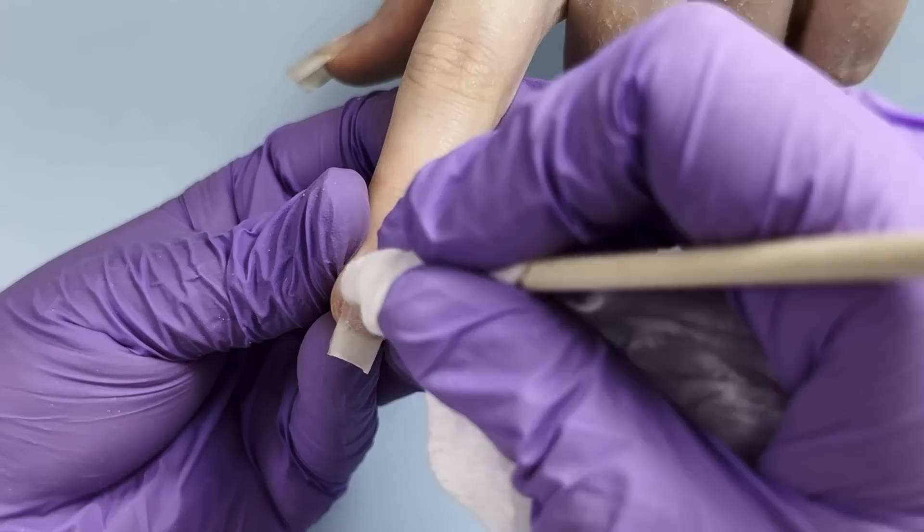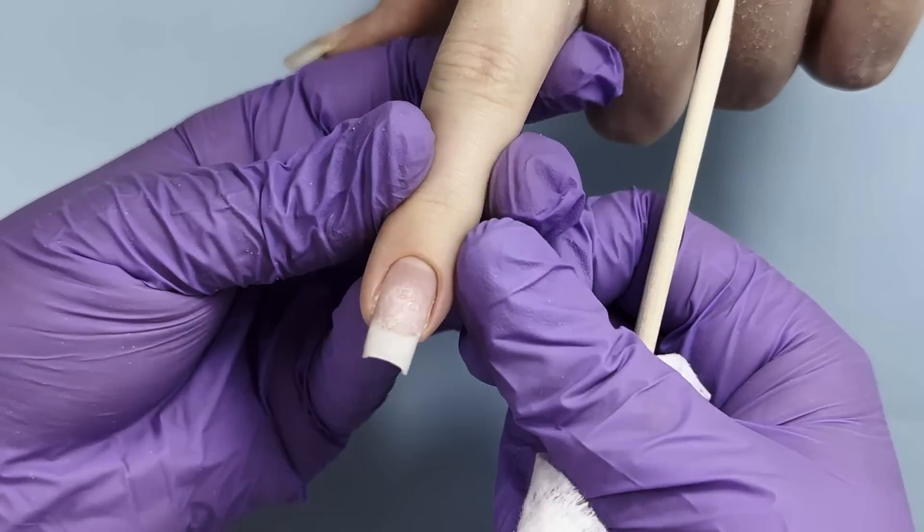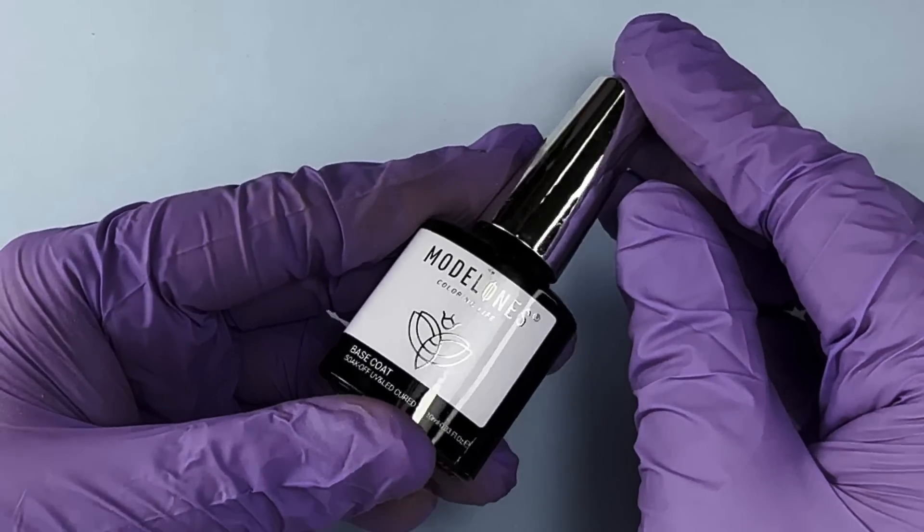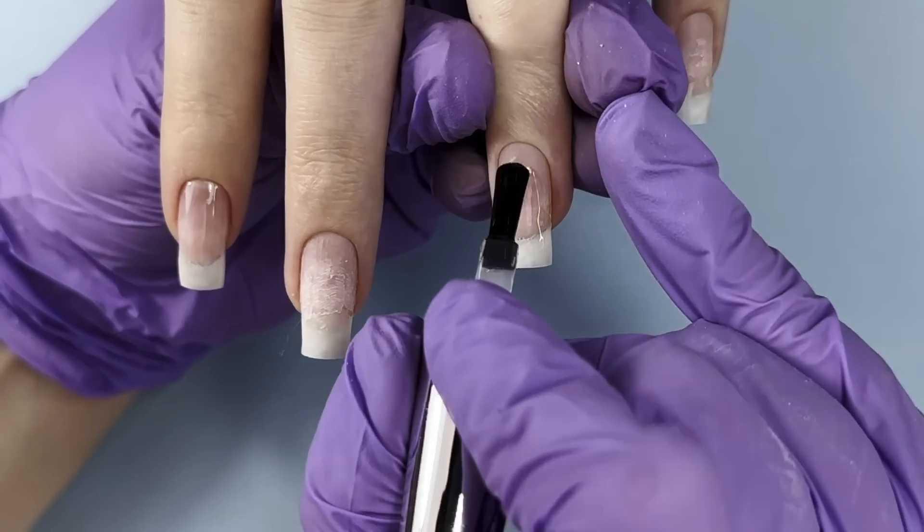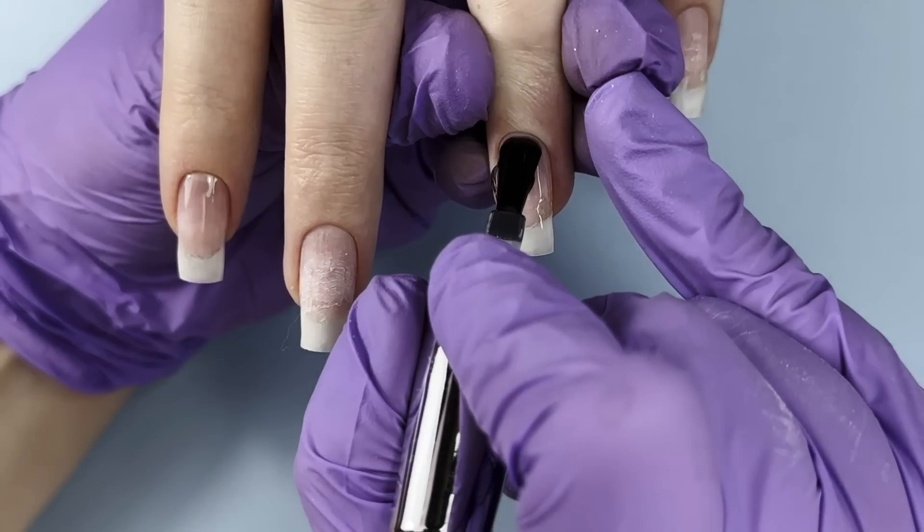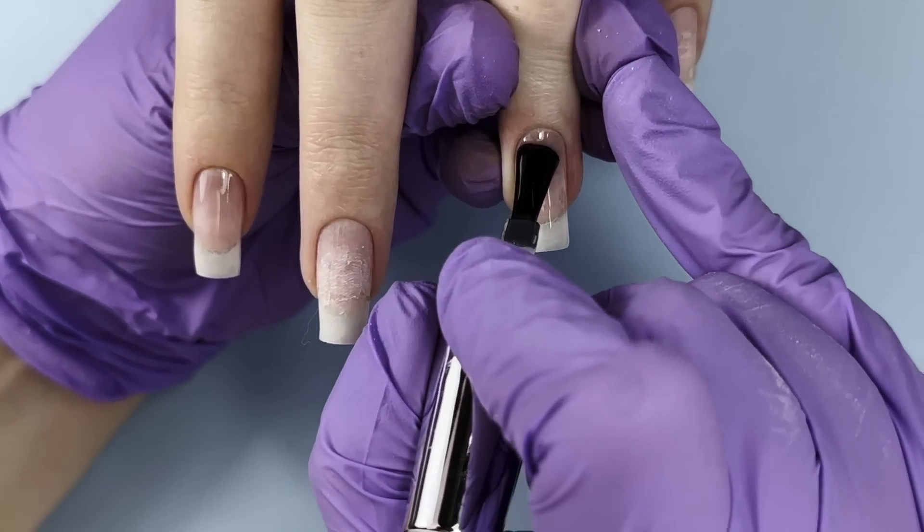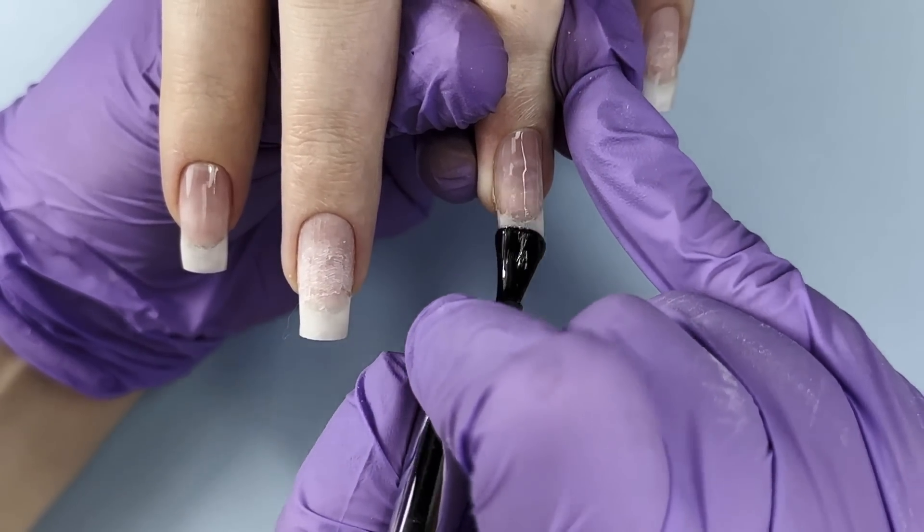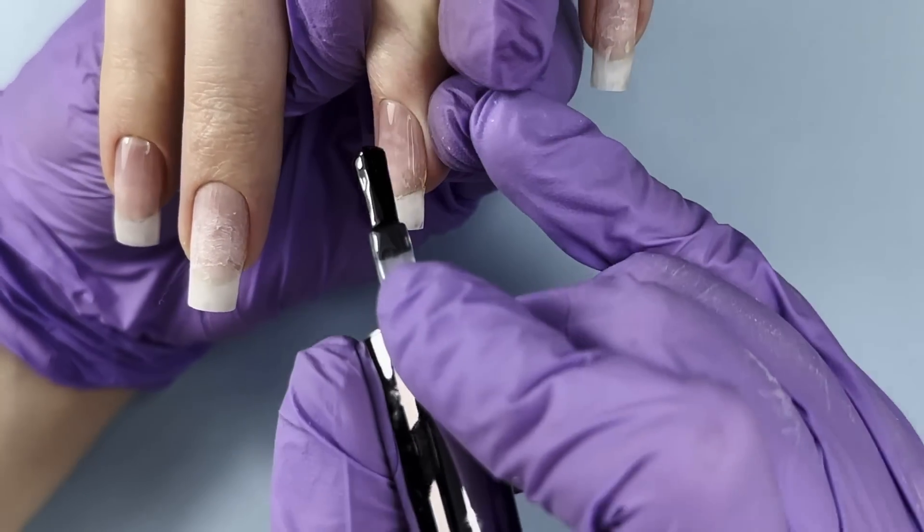I will be using Model Ones base coat. When I'm working with short nails I normally just apply a thin coat and that's enough. But this time we have longer nails and they need some extra strength, some extra overlay, just to make sure they will not break.